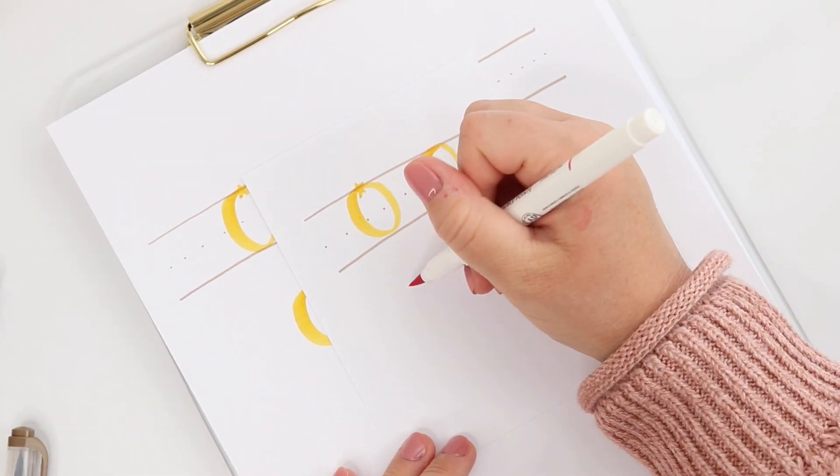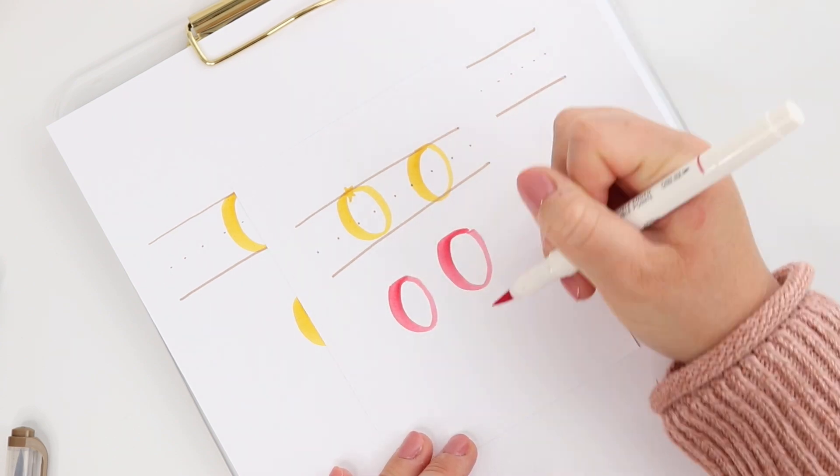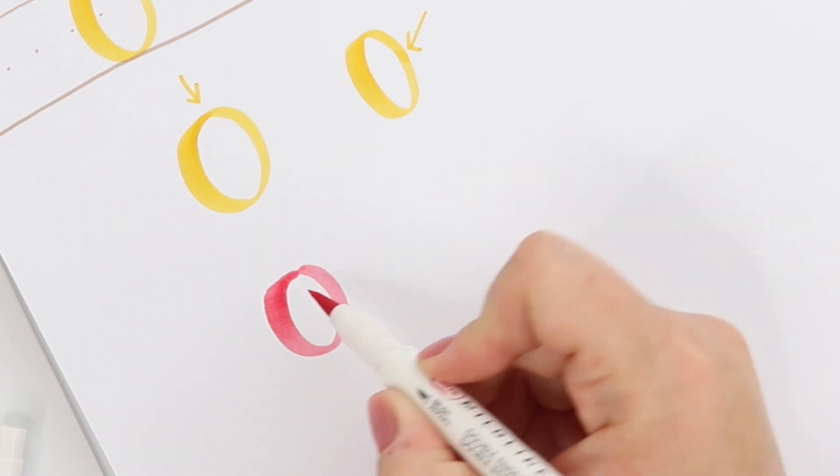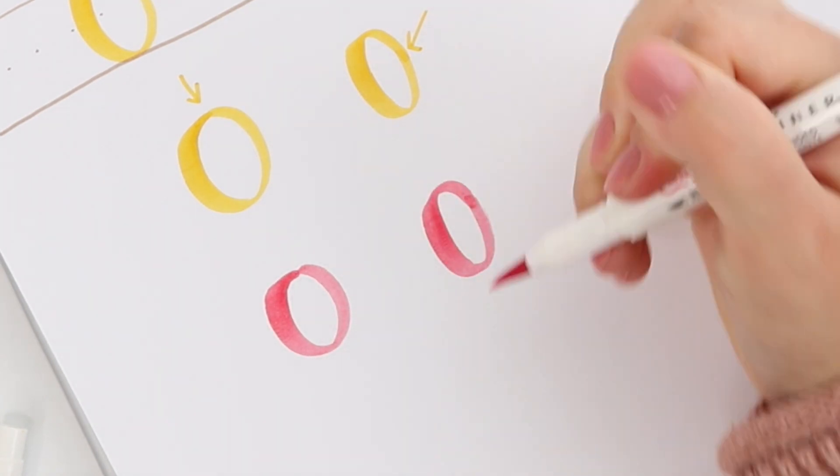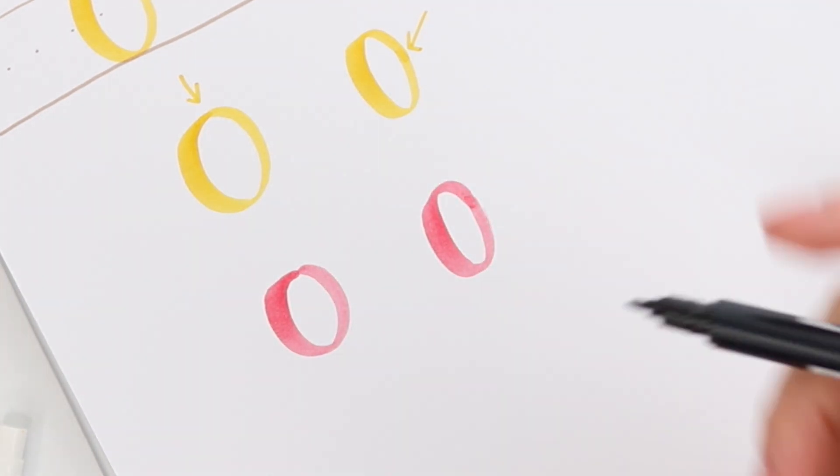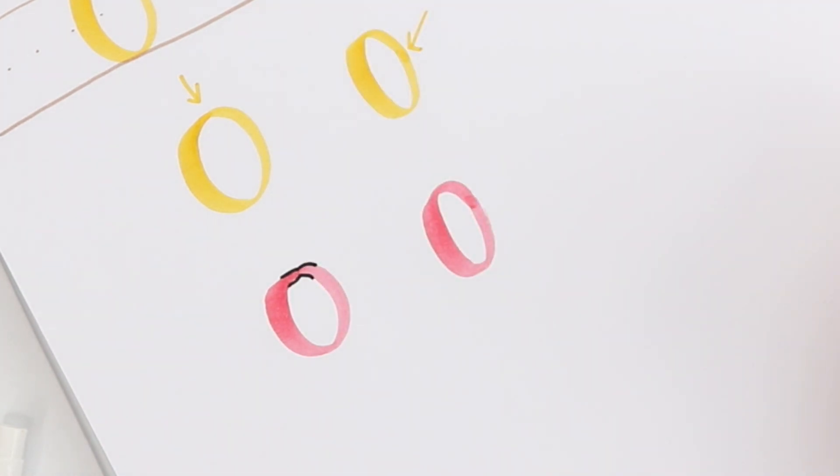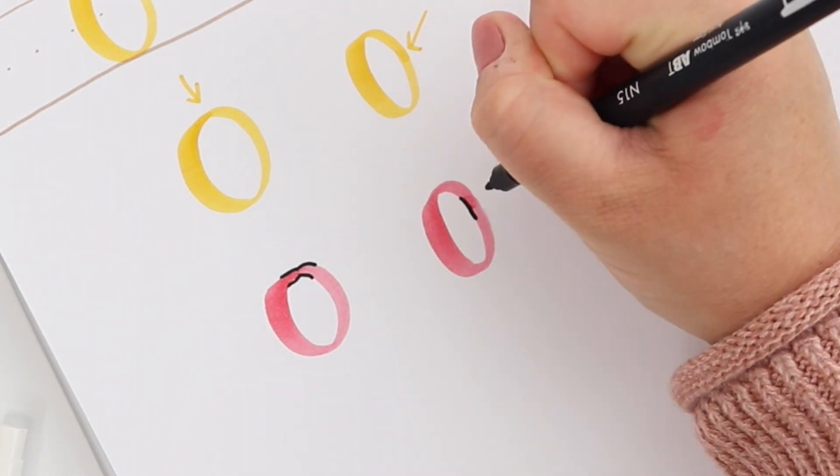When I first began hand lettering my ovals probably looked a little bit more like this where there is a slight lump at the top where my ends meet. Now in this video I outline these a bit to show you the difference and you can see that the one where I started at the top isn't quite as smooth as it is on the one where I started from the side.